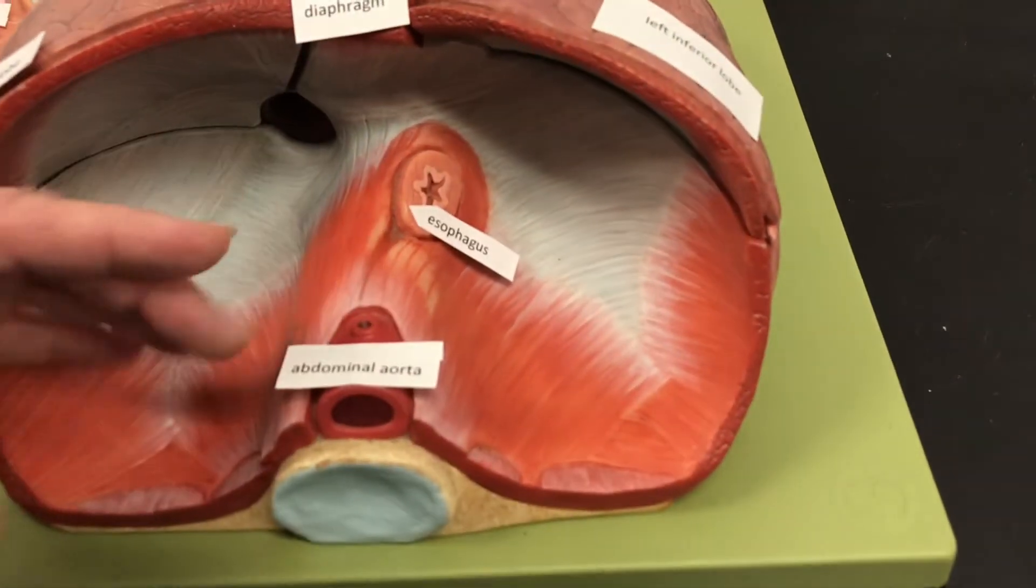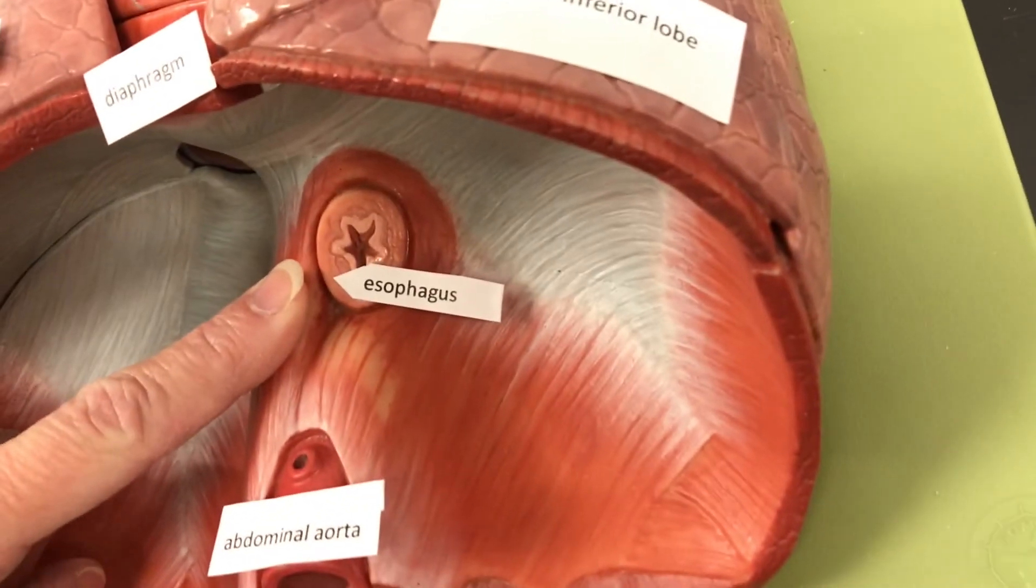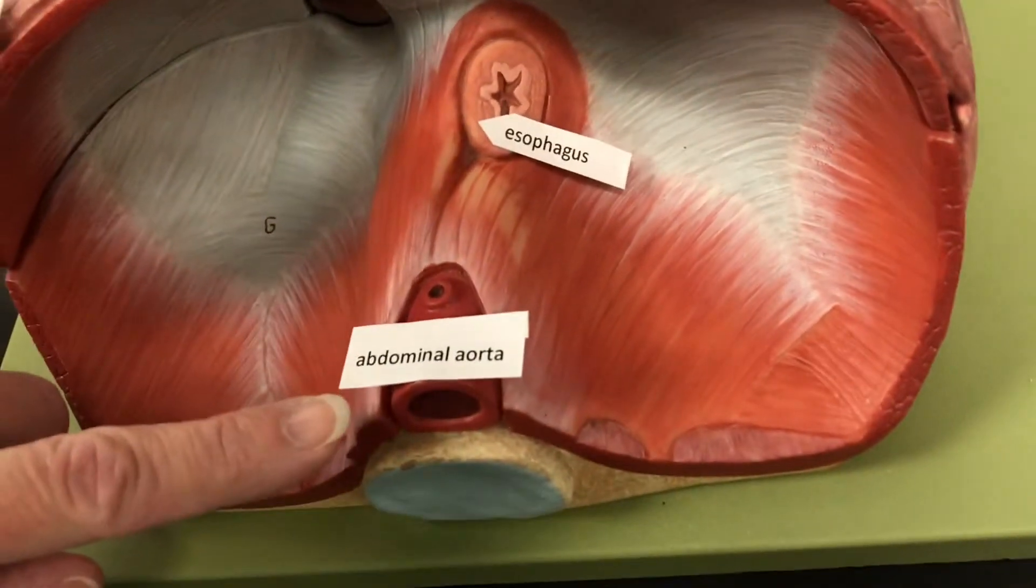There's a couple of things that go through the diaphragm. We have the esophagus. It's going to go to the stomach. And we also have the abdominal aorta.